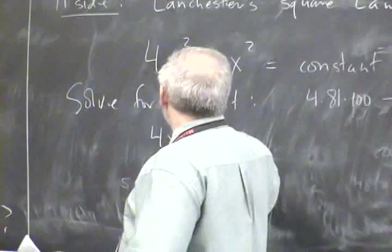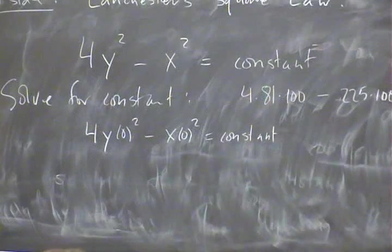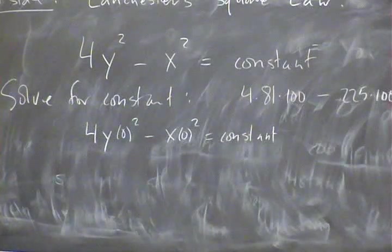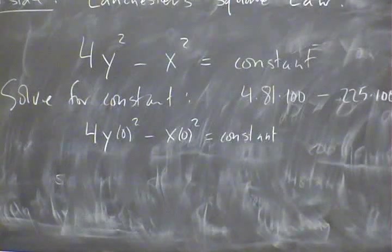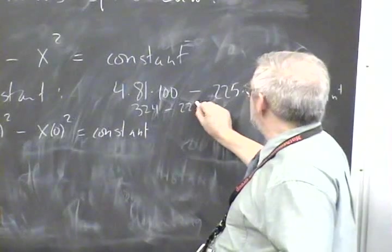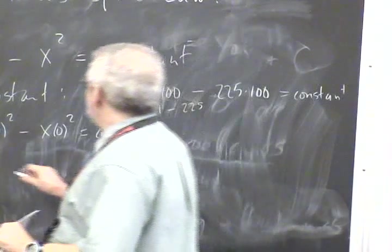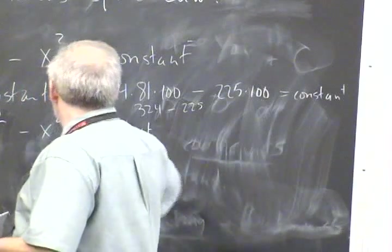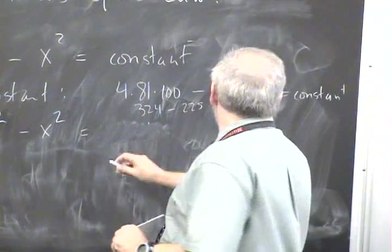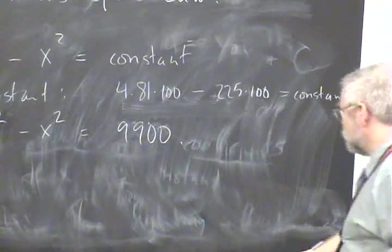How you got these constants? Just to check: 4Y₀² - X₀² plugging in. Yeah, this is 9 times 10 and this is 15 times 10, and 15² is 225. So 324 minus 225 is 99. 99 times 100. So 9900. This is Lanchester's Square Law.